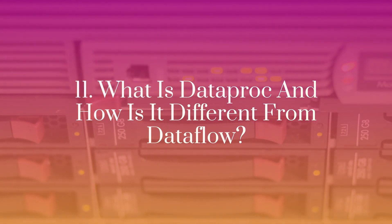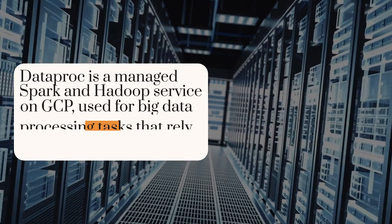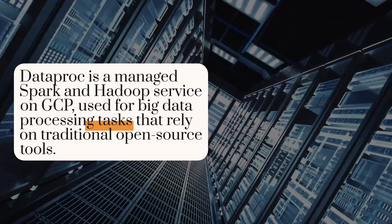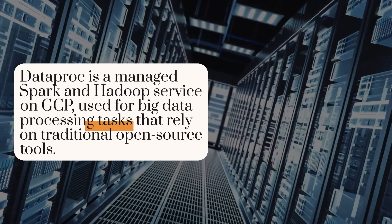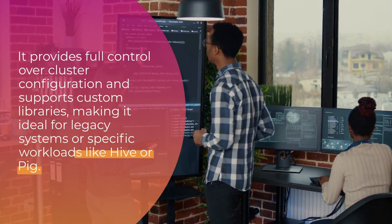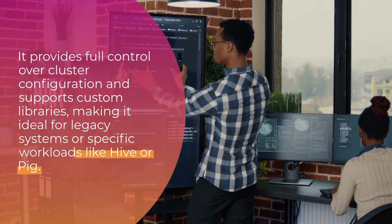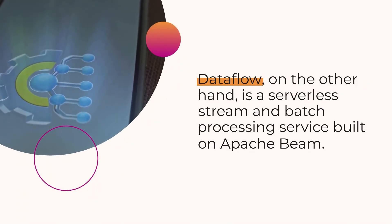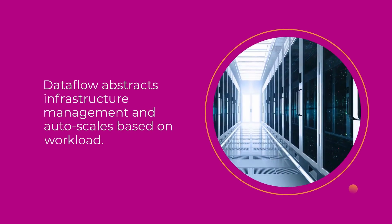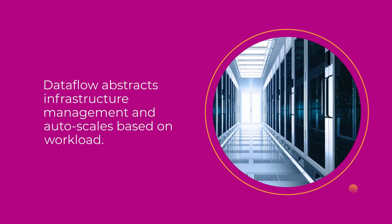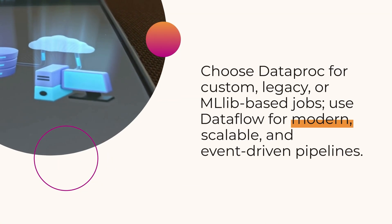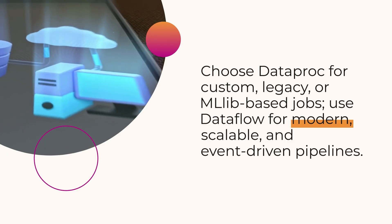Eleven: What is Dataproc and how is it different from Dataflow? Dataproc is a managed Spark and Hadoop service on GCP, used for big data processing tasks that rely on traditional open-source tools. It provides full control over cluster configuration and supports custom libraries, making it ideal for legacy systems or specific workloads like Hive or Pig. Dataflow, on the other hand, is a serverless stream and batch processing service built on Apache Beam. Dataflow abstracts infrastructure management and auto-scales based on workload. Choose Dataproc for custom, legacy, or MLlib-based jobs; use Dataflow for modern, scalable, and event-driven pipelines.